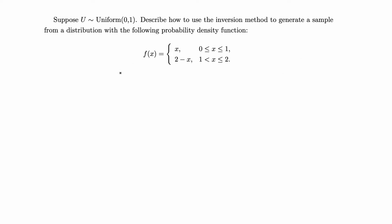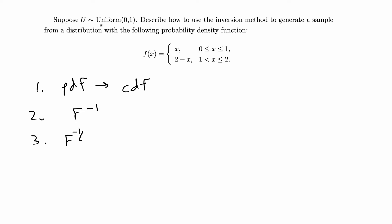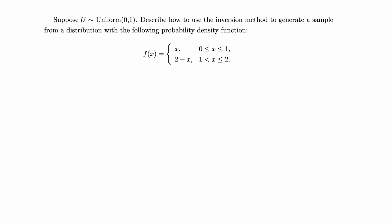I'm going to do this example in this video. The basics of the inversion method: first, you convert your given PDF into a CDF. For the second step you find the inverse CDF. In the third step you just plug in the uniform random variable into your inverse CDF, and when you sample from this distribution you will get the target distribution. Let's get started.